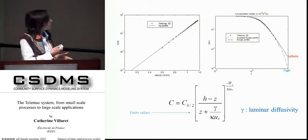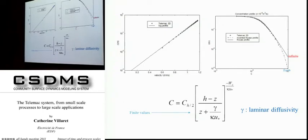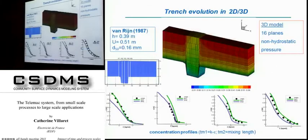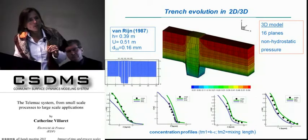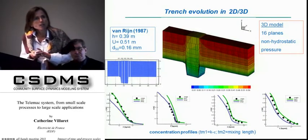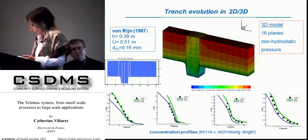This is a validation of the 3D model showing the log profile and concentration profile — comparison between TELEMAC 3D results (crosses) and the analytical solution. Another typical validation is the Van Rijn experiment, with detailed measurements of the propagation of a trench and concentration and velocity profiles at different vertical planes. We used a 3D model with 16 vertical planes and non-hydrostatic pressure and get good agreement, with best agreement using k-epsilon or sometimes the mixing length model depending on the station.